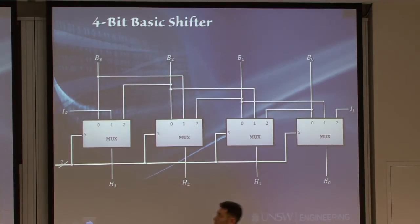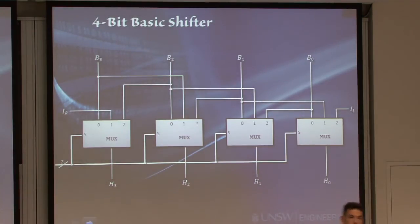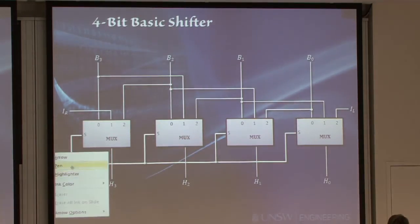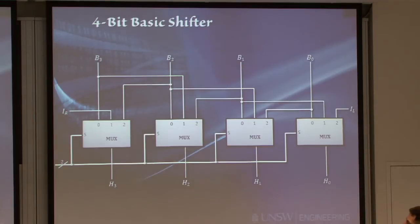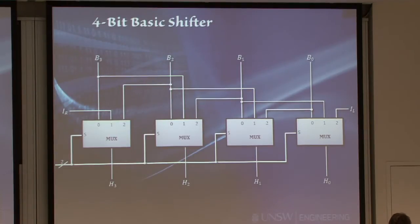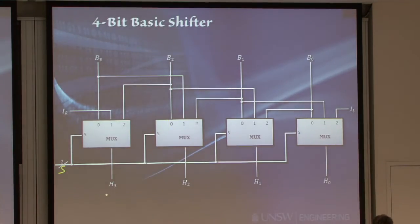Implementing a shifter is actually quite easy. You take N multiplexers and cascade them side by side, all controlled by the same select signal. Following the lines shows how the shifting works. When S is 0, everything with the 0 input is selected, which gives B3, B2, B1, B0 — meaning no shifting has occurred.